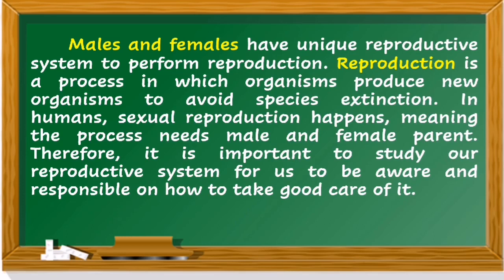Males and females have unique reproductive systems to perform reproduction. Reproduction is a process in which organisms produce new organisms to avoid species extinction. In humans, sexual reproduction happens, meaning the process needs a male and female parent. Therefore, it is important to study our reproductive system for us to be aware and responsible on how to take good care of it.